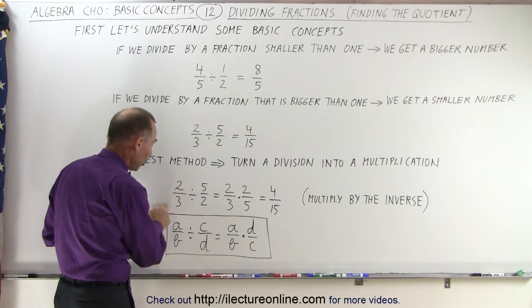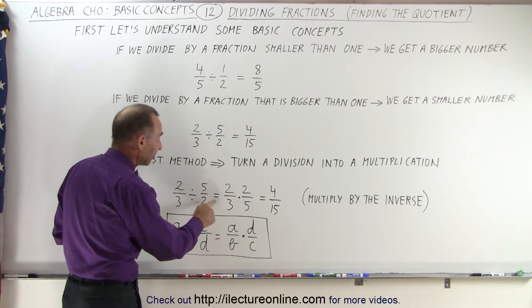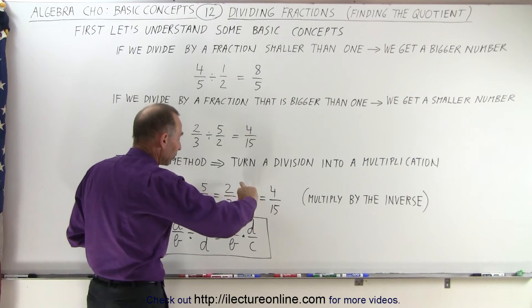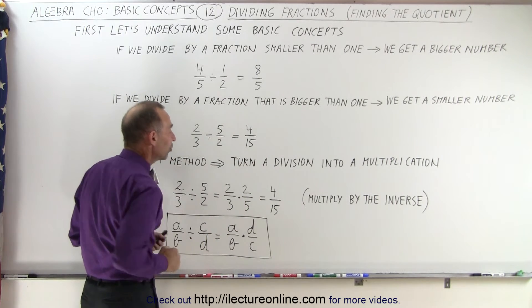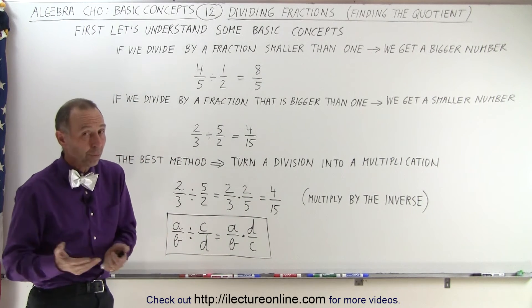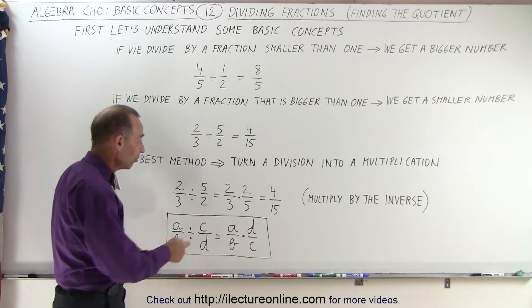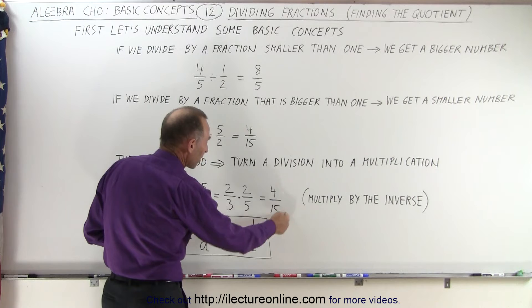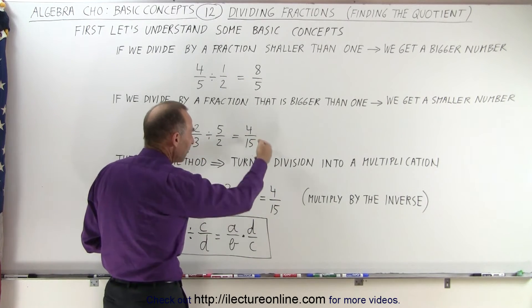So here we say 2 thirds divided by 5 halves is exactly the same as 2 thirds times the inverse of that, simply turn the fraction around, times 2 fifths. And of course, we already know how to multiply fractions. We multiply the numerators together, we multiply the denominators together, and that's where the 4 fifteenths came from.